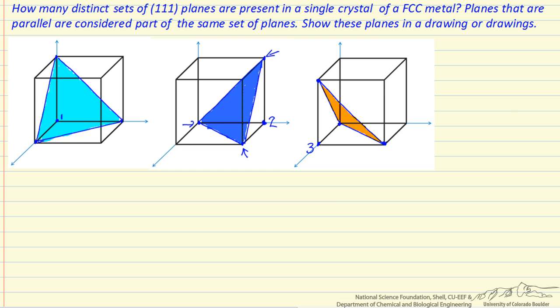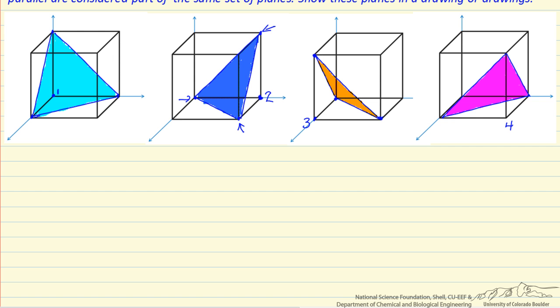And then finally I can do it for a fourth. So when I have picked point number 4 as the origin, look at the intercepts, again I have a (1,1,1) plane, and it is not parallel to these other three, so we have at least four sets of (1,1,1) planes. Now the question might be asked, well we have four other corners of this square unit cell, how about if we pick one of those?